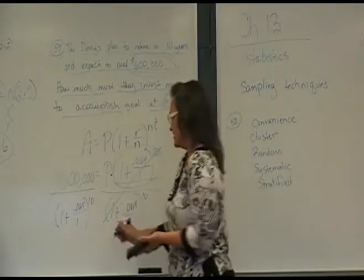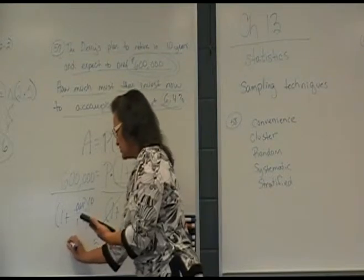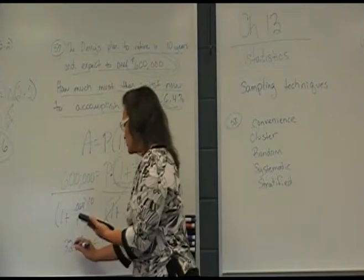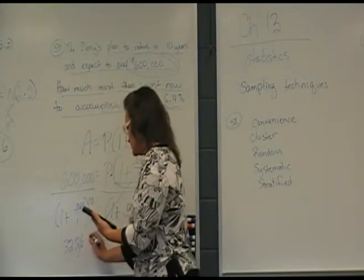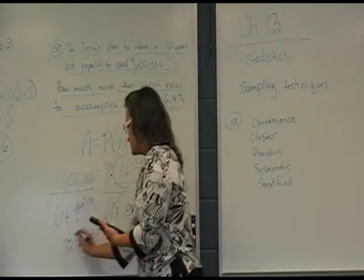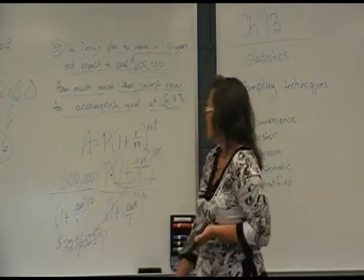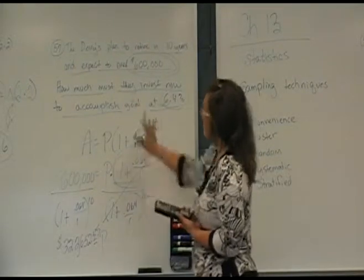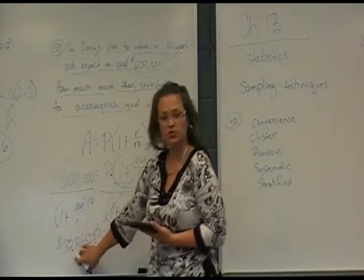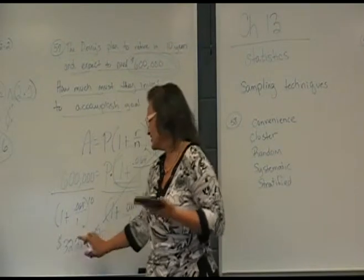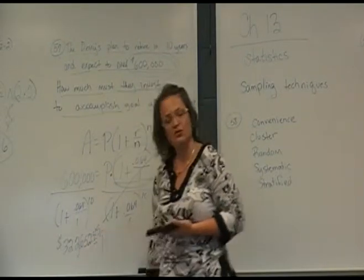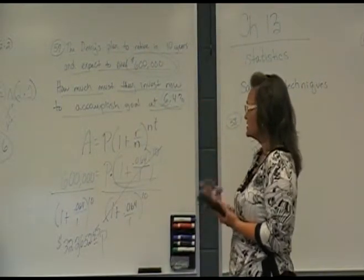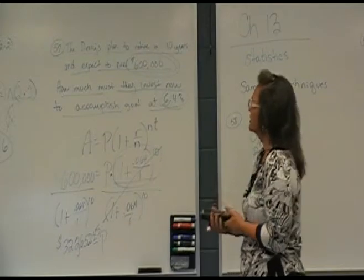Okay, the answer is P will equal $322,652.45 to the nearest cent. So you need about half of that. So it's good to know your money would almost double in 10 years. So you need $322,652.45 for your starting value for it to grow to $600,000 at 6.4% for 10 years. So that's a handy formula.